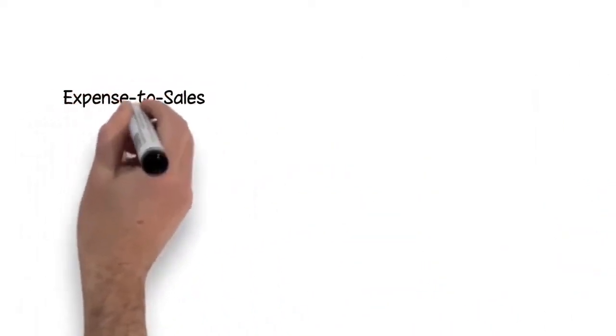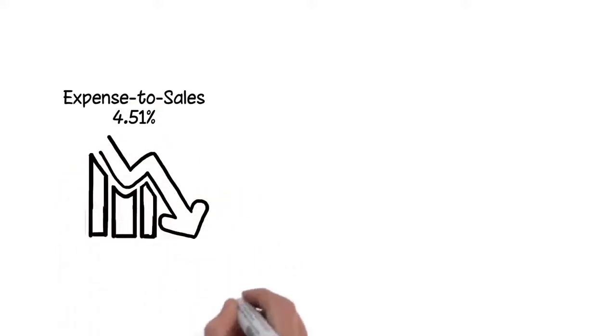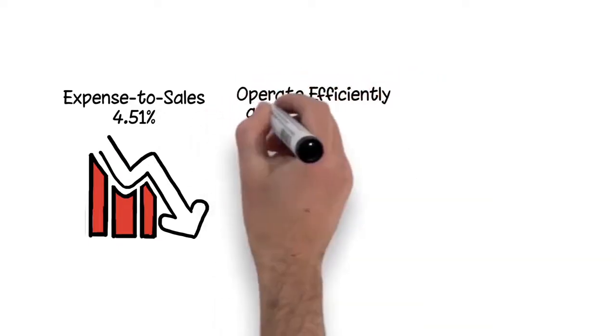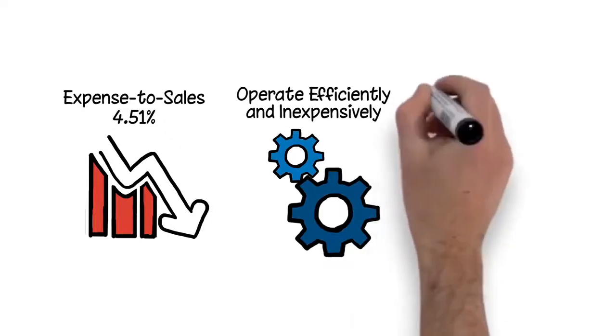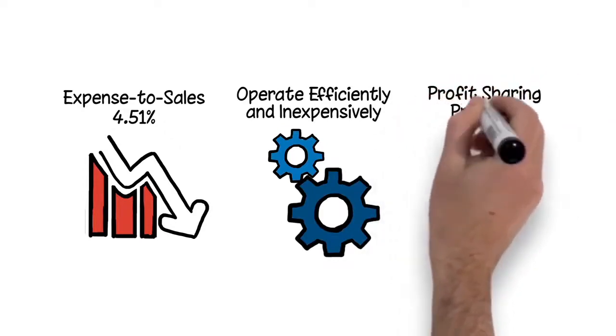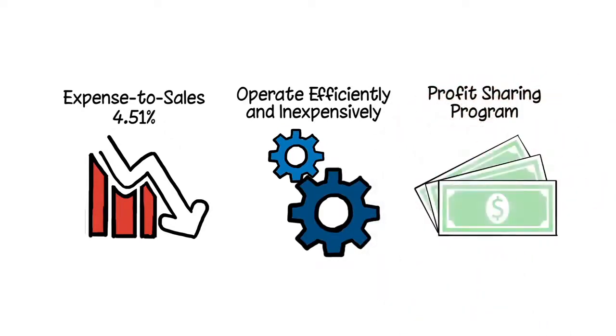All these factors contribute to our expense to sales goal of less than 4.51%. This is the cost of running the RSCs compared to the sales in those same RSCs, and it's a significant contributor to the company's strong need to operate efficiently and inexpensively. The more efficiently we operate the business, the more profit we have to distribute to shareholders via the dividend and to employees via the profit-sharing program.